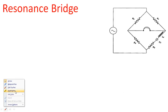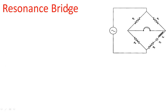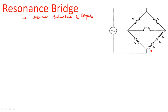In this video I am going to introduce two more important bridges: the resonance bridge and Owen's bridge. The name clearly tells that a resonance component — an RLC combination — is used in one of the arms of this bridge. The three arms are pure resistive components and the fourth arm uses an RLC component. The purpose of the resonance bridge is to calculate unknown inductance and capacitance.